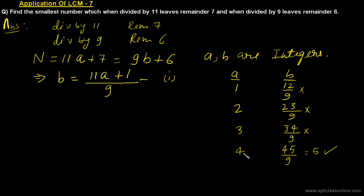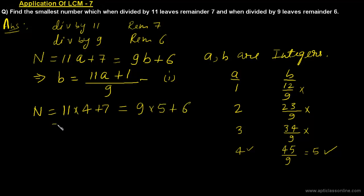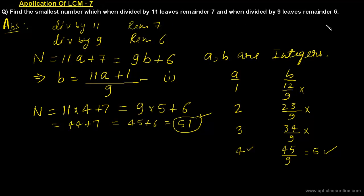So with a = 4 we get an integral value of b = 5. We can now find the number by substituting: n = 11 × 4 + 7 = 44 + 7 = 51, or equivalently 9 × 5 + 6 = 45 + 6 = 51. So 51 is the smallest number which when divided by 11 leaves remainder 7 and when divided by 9 leaves remainder 6. We found this using the general method.